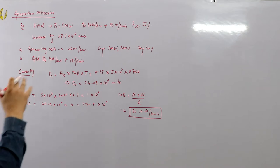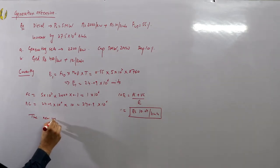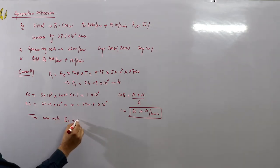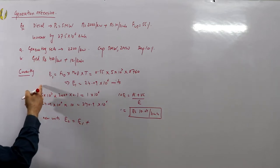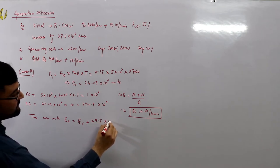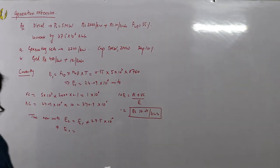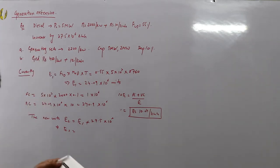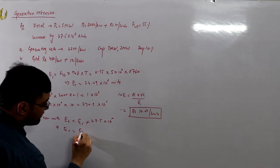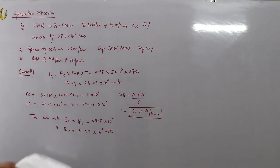After introducing the second phase, the new total energy units E2 = E1 + 27.5×10⁶ = 24.09×10⁶ + 27.5×10⁶ = 51.59×10⁶ kWh. All further calculations for Option A will be based on this new E2 figure.